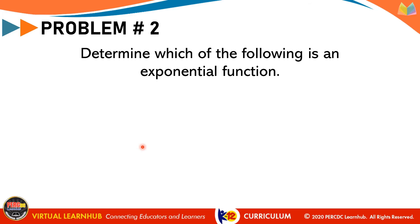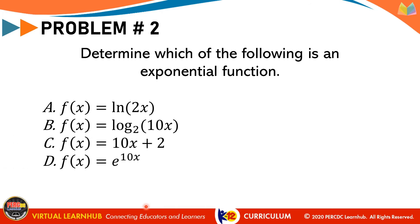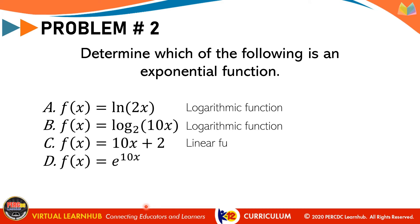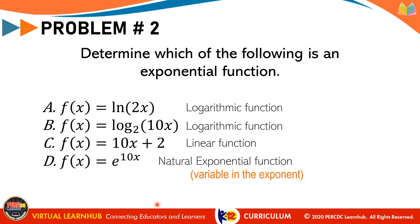For problem number 2, determine which of the following is an exponential function. A: f(x) equals ln of 2x. B: f(x) equals log of 10x to the base 2. C: f(x) equals 10x plus 2. And D: f(x) equals e raised to 10x. A is a logarithmic function, specifically a natural logarithm. B is also a logarithmic function. C is a linear function. And D is the exponential function — more specifically, the natural exponential function — because of the variable or argument in the exponent.